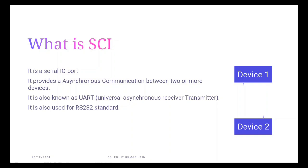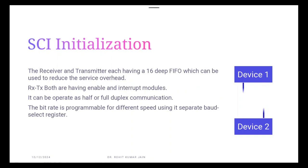SCI is commonly used according to RS-232 standards. The SCI receiver and transmitter each have a 16-deep FIFO for reducing service overhead, each with its own separate enable and interrupt bits. Both can be operated independently for half-duplex communication or simultaneously for full-duplex communications. To maintain data integrity, the SCI checks receive data for break detection, parity, overrun, and framing errors. The bit rate is programmable through a 16-bit baud select register.